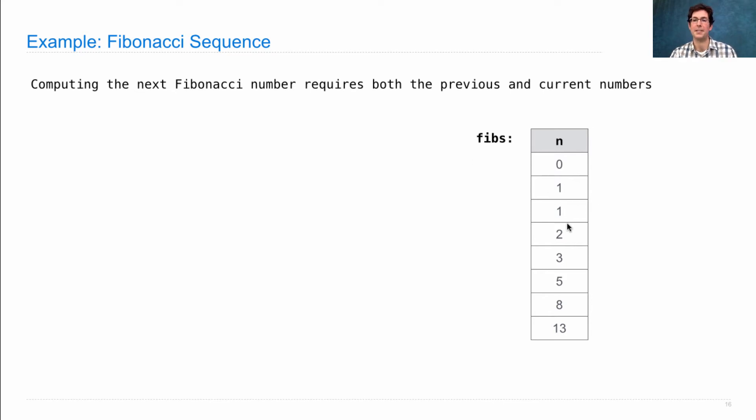We want the table of all Fibonacci numbers starting at zero. And we'll include one twice because it's there twice. And we'll have 2, 3, 5, 8, 13, et cetera.